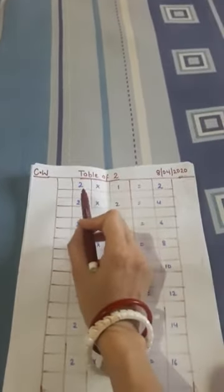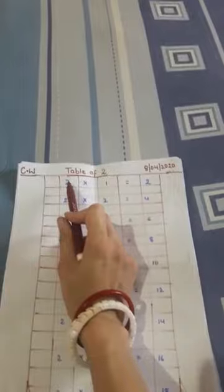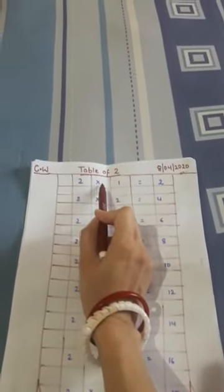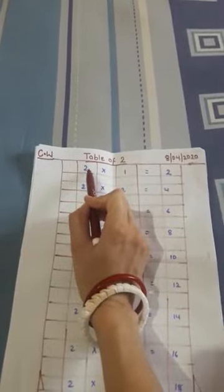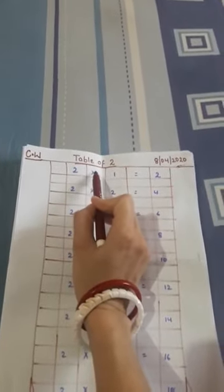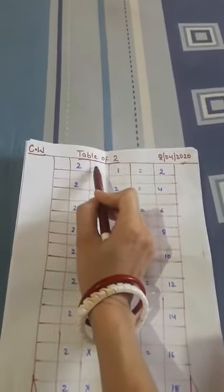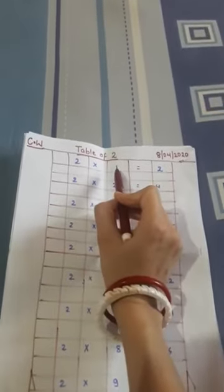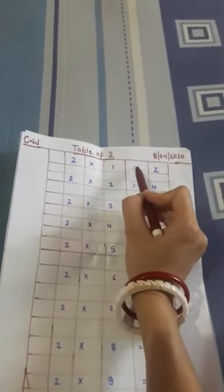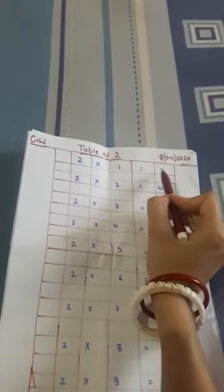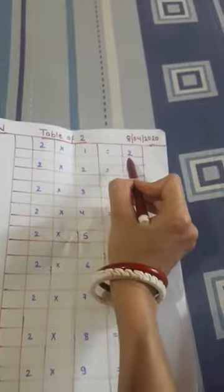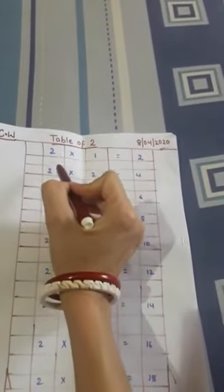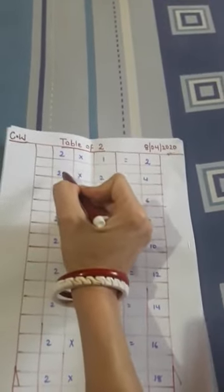Now start writing table. 2×1=2. In one box you have to write 2 then sign of cross then 1 then sign of is equal to then 2. You have to leave this box. One box you have to leave in each line.